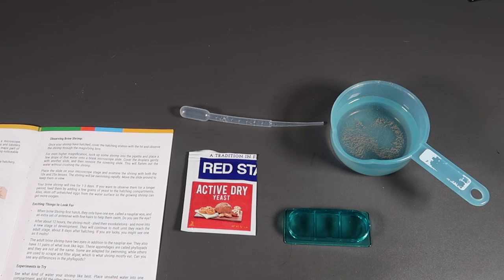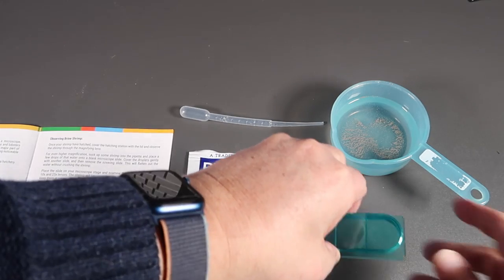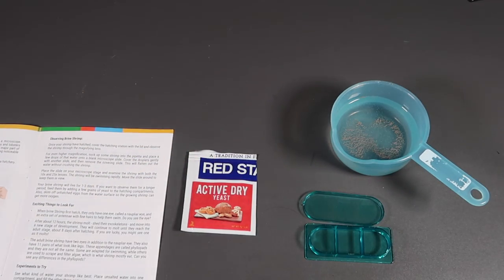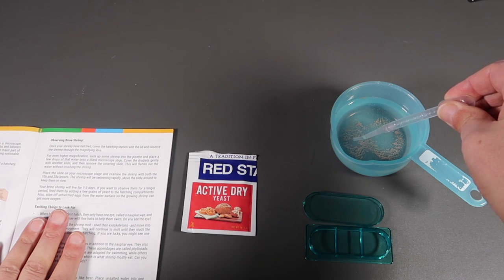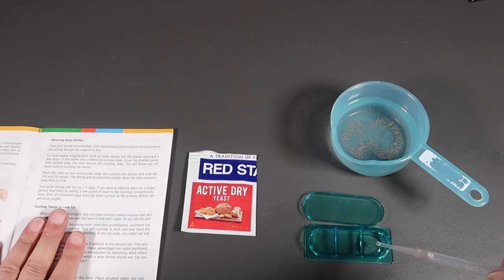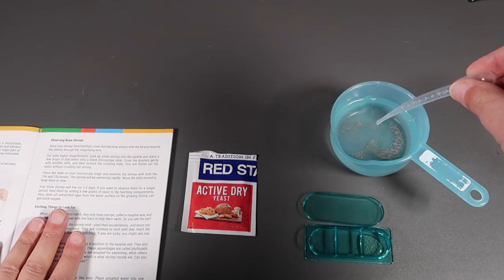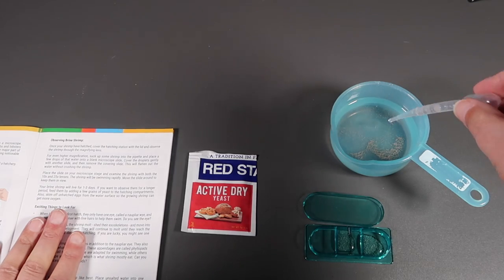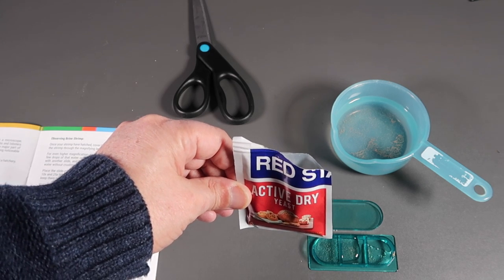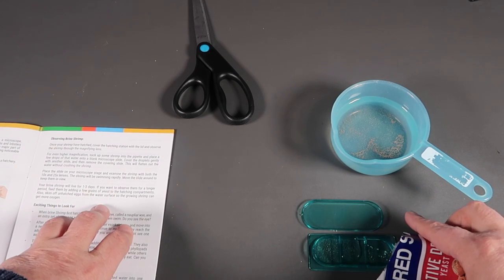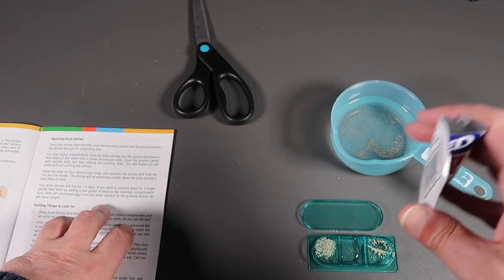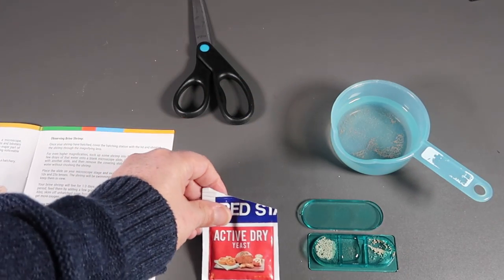Now we're going to do the final step. We're going to open up the shrimp hatchery and deposit some of the shrimp with the brine solution into these trays. We're going to get three samples. Now we're going to add yeast to two of the compartments and leave the centre one as a control. And the yeast is going to give them something to eat as they develop from the larvae that we saw swimming around into the mature shrimp. And we'll come back tomorrow and take a look.